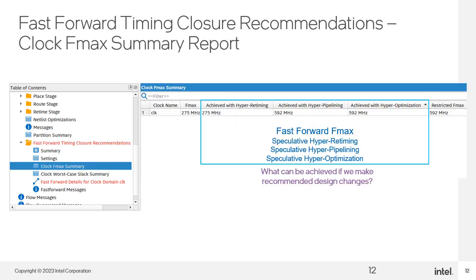One of the reports generated by Fast Forward Analysis is the Clock FMax Summary Report. The first value in the FMax column — 275 MHz in this example — is referred to as the base performance, or the design performance before any Fast Forward analysis. It is basically the performance of the netlist after the retime stage of the fitter. The three columns highlighted — Achieved with HyperRetiming, Achieved with HyperPipelining, and Achieved with HyperOptimization — display the results of different stages of Fast Forward analysis. In this example, the HyperRetiming value is also 275 MHz, so HyperRetiming alone did not produce any gain.